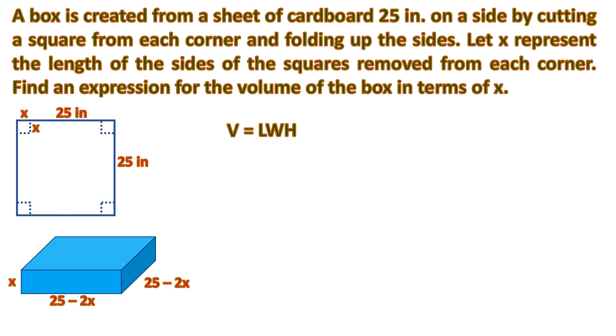Observe that the one on top is 25 inches long for each side. But since we are going to cut x inches in both sides of the corner, there will be minus 2x because there are two x's that will be cut. That's why it's 25 minus 2x for each side of our box.